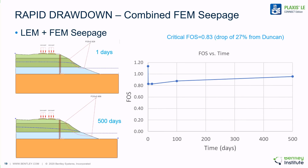If we take the calculated pore water pressures from the seepage model and import them to the stability model and then calculate an updated factor of safety at various points in time, we can see that the location and shape of the slip surface changes as a result of the change in pore water pressures within the slope.